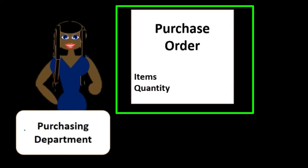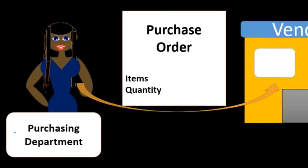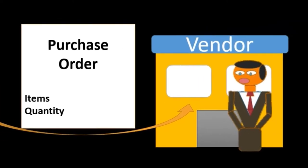The purchasing department could then take that purchase requisition and make a purchase order from it, taking the items and the quantity, and that would then go to the vendor.